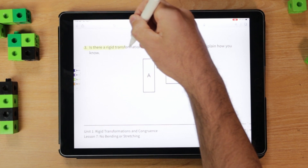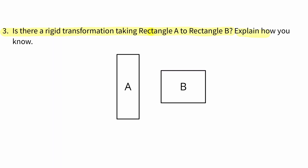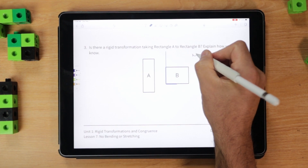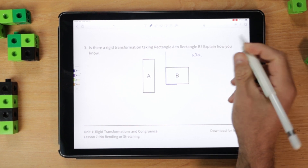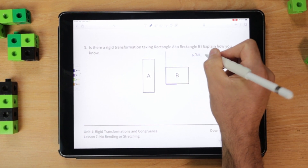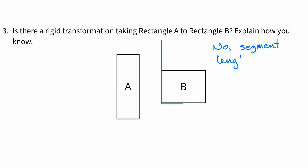Number three: is there a rigid transformation taking rectangle A to rectangle B? Explain how you know. Let's just check the corresponding sides. That does not work — these are all different measures and different lengths, so I'm going to have to say no. Segment lengths are preserved under a rigid transformation.